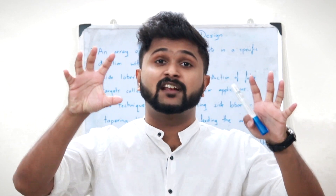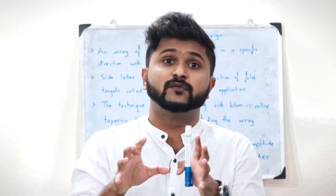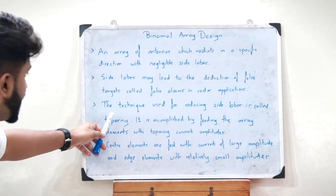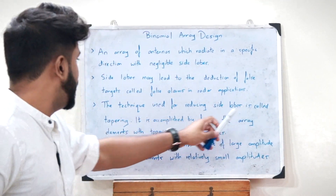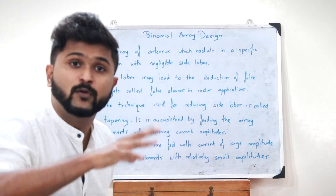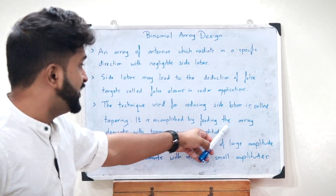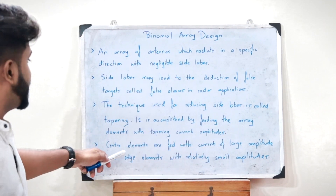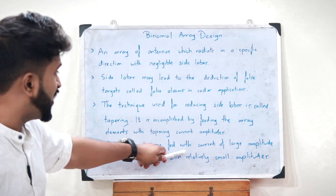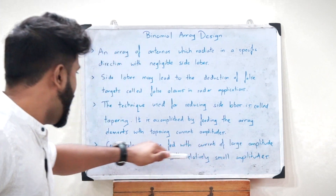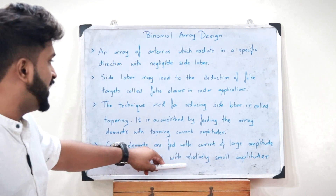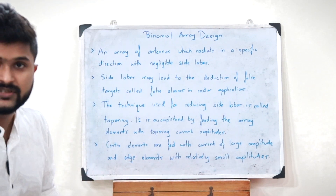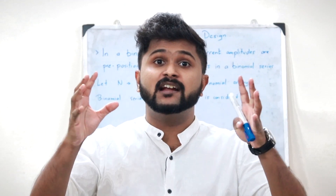Side lobes are reduced through a process called tapering. Tapering is accomplished by feeding the array elements with tapering current amplitudes — the center elements are fed with currents of very large amplitude, and the edge elements with relatively small amplitude.